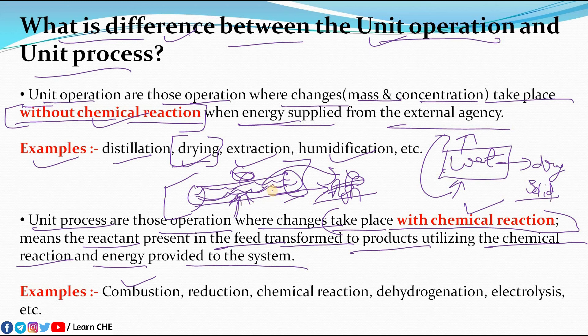There are many examples of unit process such as reduction, oxidation, any chemical reaction where reactants convert into products, dehydrogenation, and electrolysis. Please let me know in the comments more examples or applications of unit operation and unit process.